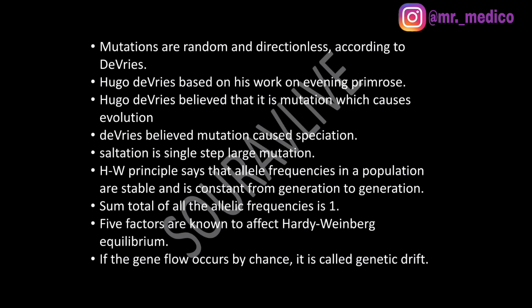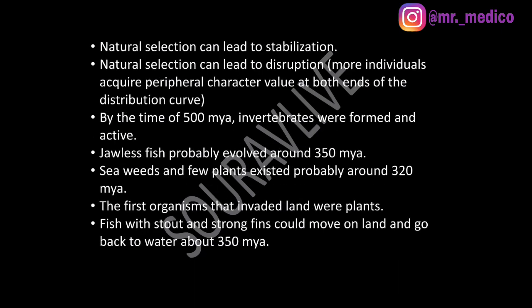Five factors are known to affect Hardy-Weinberg equilibrium. If gene flow occurs by chance, it is called genetic drift. Natural selection can lead to stabilization or disruption. Disruption occurs when more individuals acquire peripheral character values at both ends of the distribution curve.